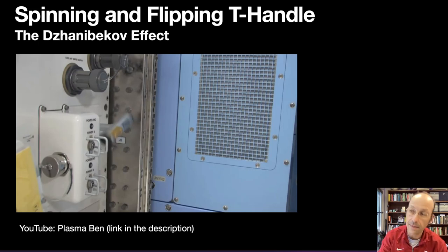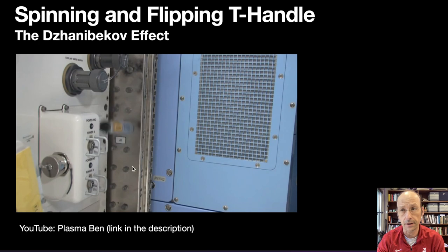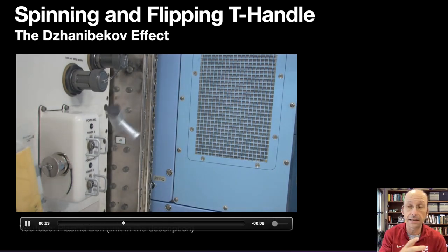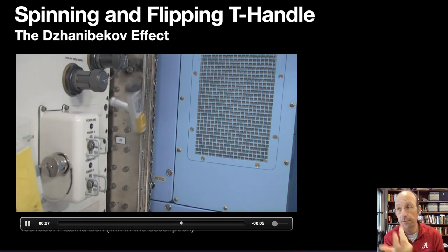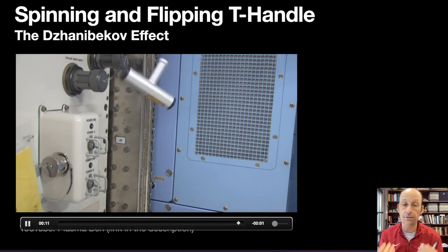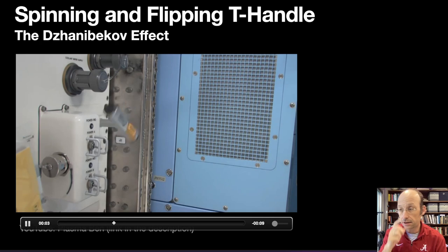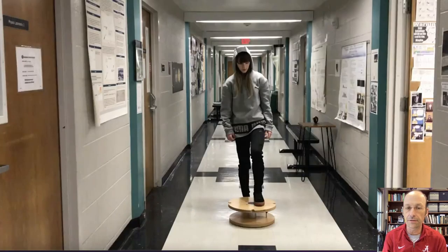So maybe you've seen this before. Veritasium has a great video on this. This is the Dzhanibekov effect. The idea is you have this handle, and this is in the space station so that you can really see the effect. It's spinning, and when it spins, it flips back and forth, which is really kind of cool. You can make an explanation of this based on the moment of inertia tensor and all that stuff, but I want to make a different explanation.